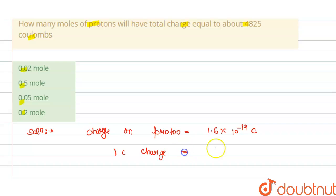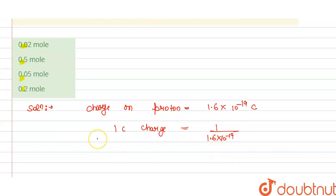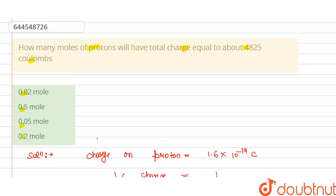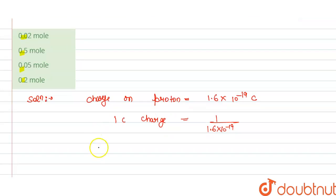is equals to 1 divided by 1.6 into 10 power minus 19. So we have 4825 coulombs given to us, so 4825 coulombs charge